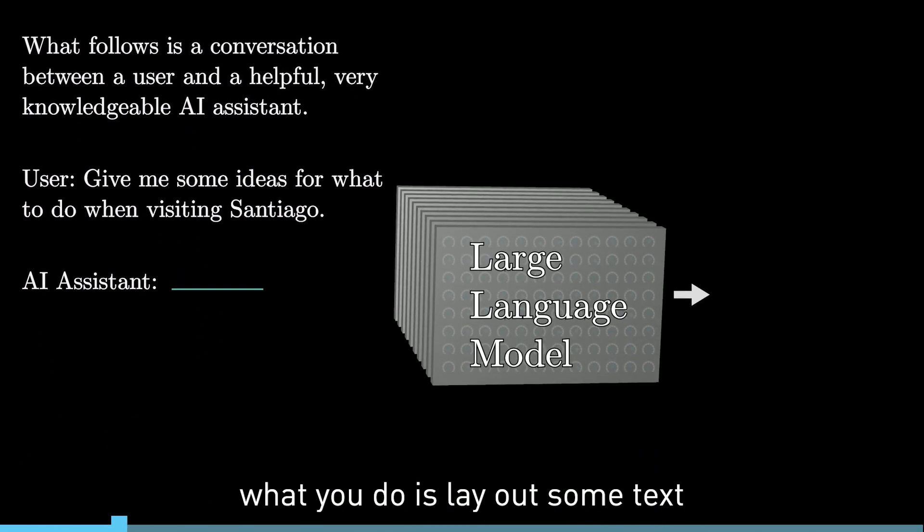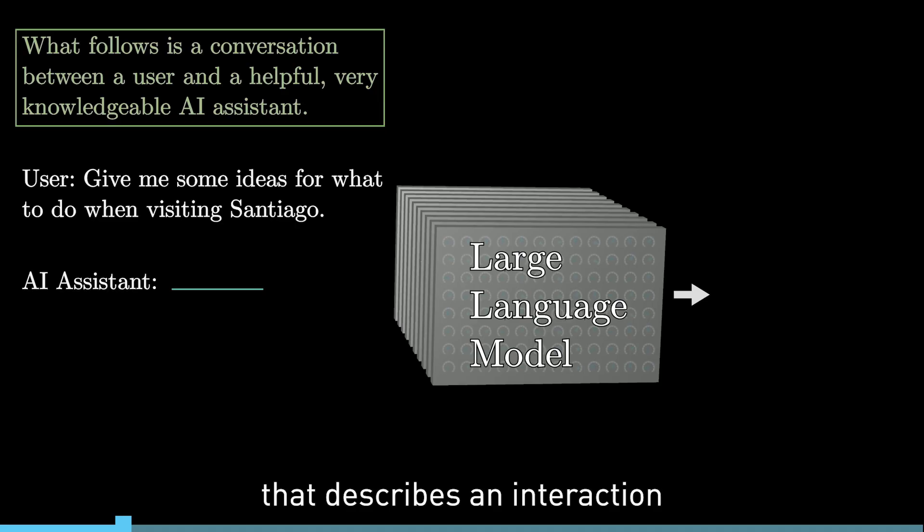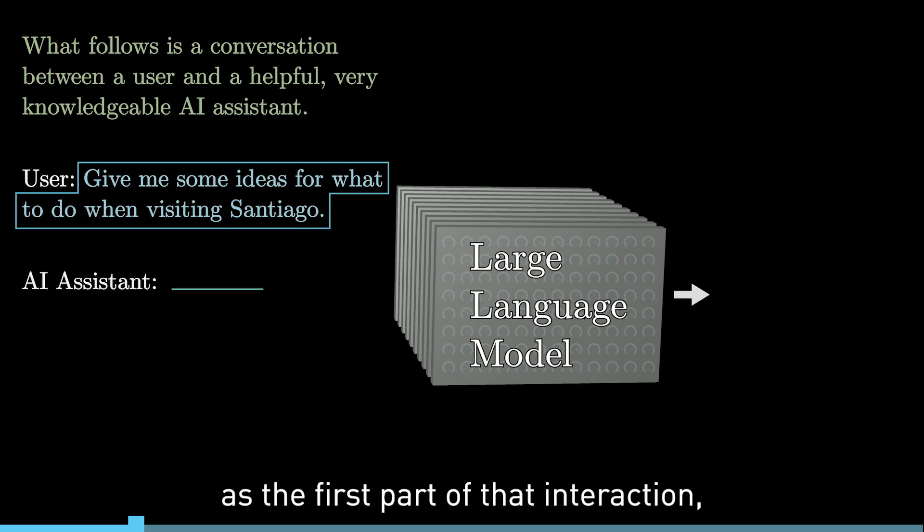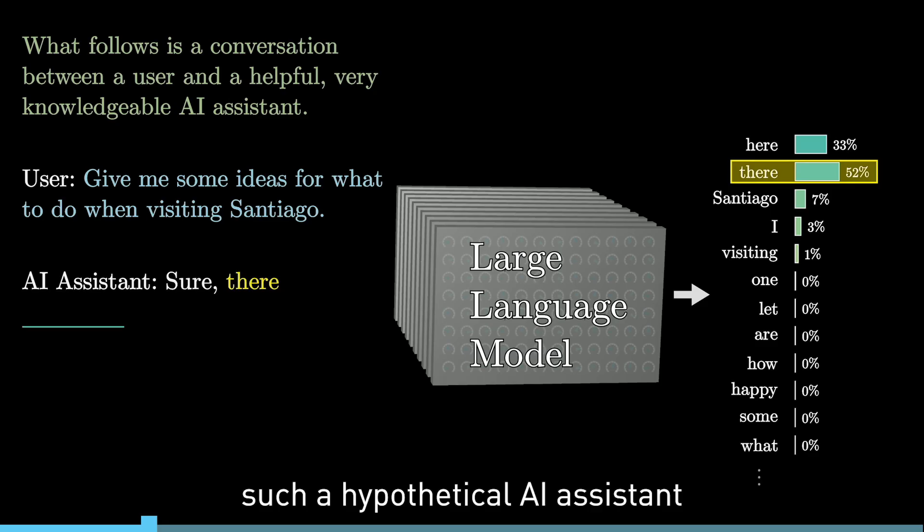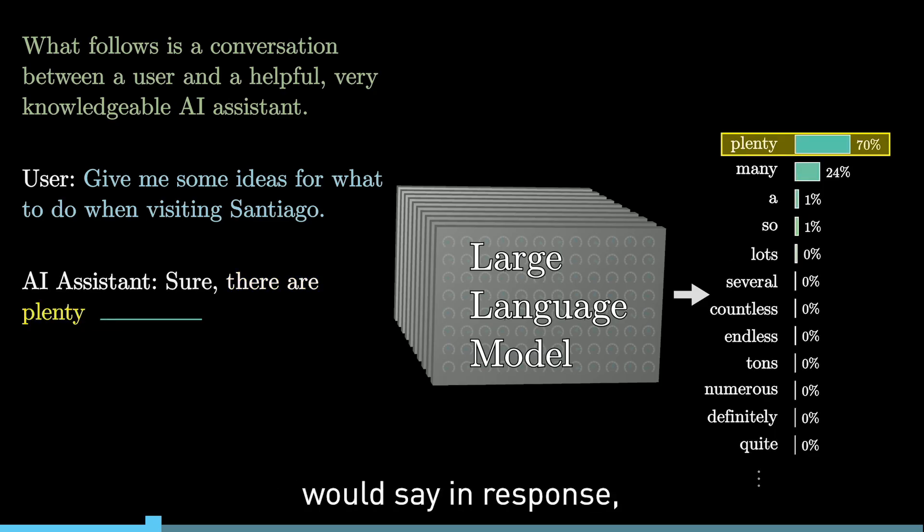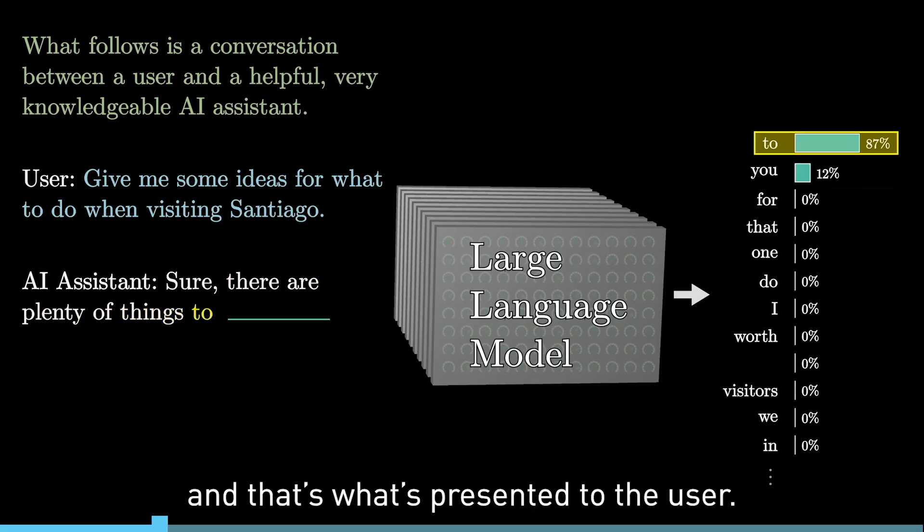To build a chatbot, what you do is lay out some text that describes an interaction between a user and a hypothetical AI assistant. You add on whatever the user types in as the first part of that interaction, and then you have the model repeatedly predict the next word that such a hypothetical AI assistant would say in response, and that's what's presented to the user.